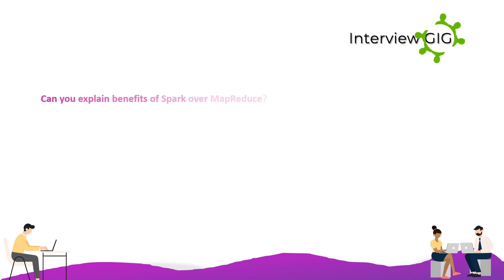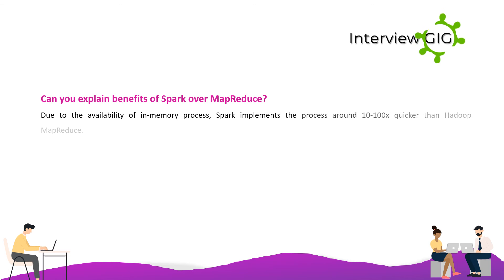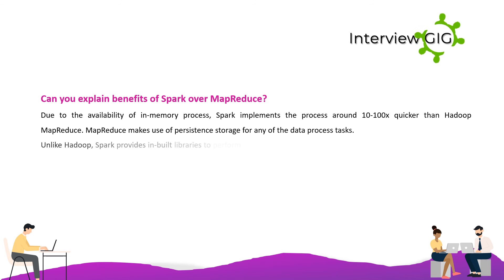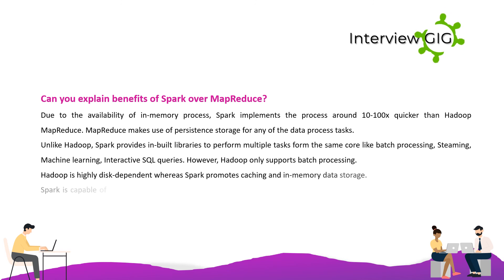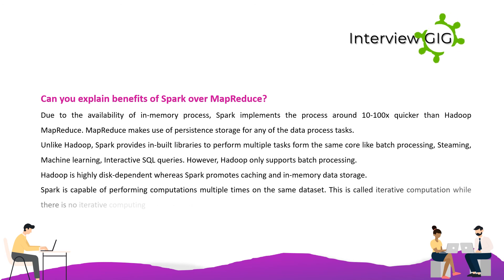Can you explain benefits of Spark over MapReduce? Due to in-memory processing, Spark is around 10–100x quicker than Hadoop MapReduce. MapReduce uses persistent storage for data processing tasks. Unlike Hadoop, Spark provides built-in libraries to perform multiple tasks from the same core — such as batch processing, streaming, machine learning, and interactive SQL queries — whereas Hadoop only supports batch processing. Hadoop is highly disk-dependent, while Spark promotes caching and in-memory data storage. Spark also supports iterative computation, which Hadoop does not.